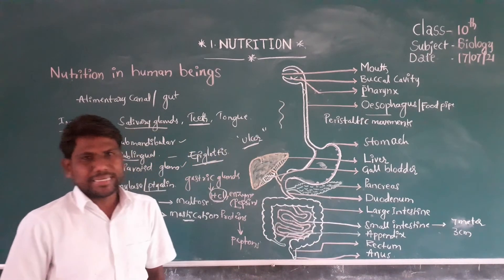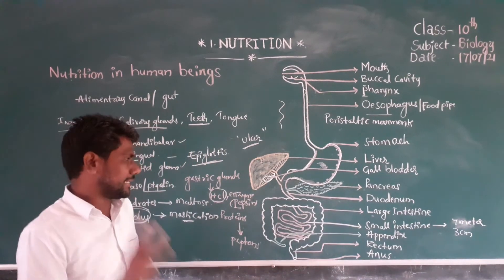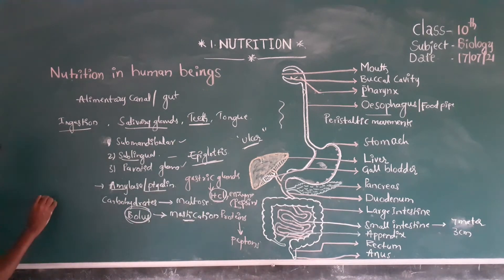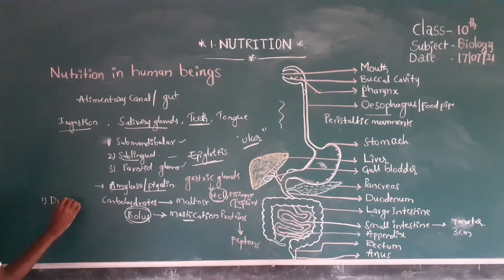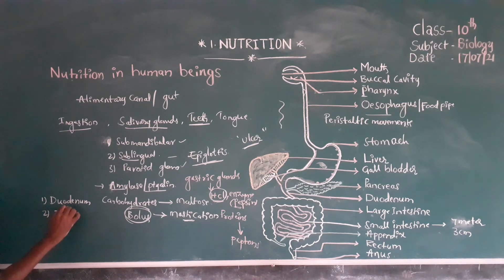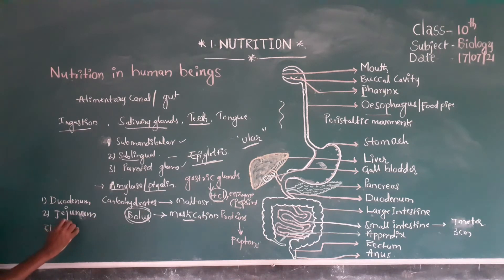The small intestine consists of mainly three parts: the first one is the duodenum, the second one is the jejunum, and the third one is the ileum.